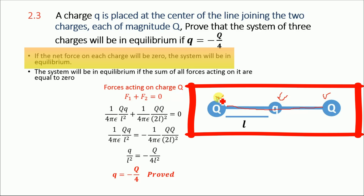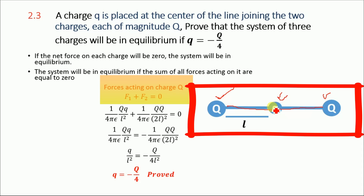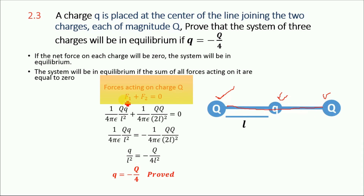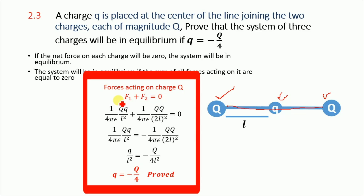Now let's consider the sum of all forces acting on charge Q. Two forces are acting on this charge: one is the force due to the small charge q, denoted F1, and the second is the force due to the other capital charge Q, denoted F2. F1 is equal to 1 over 4π ε₀ times Q times q divided by l squared, where l is the distance of separation between the capital charge Q and the small charge q.